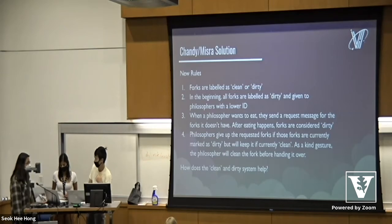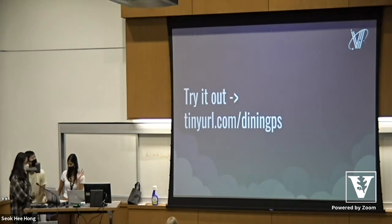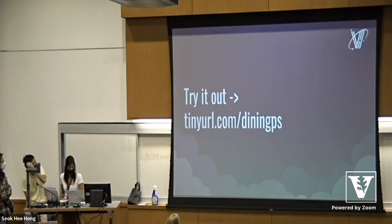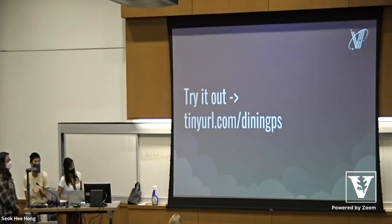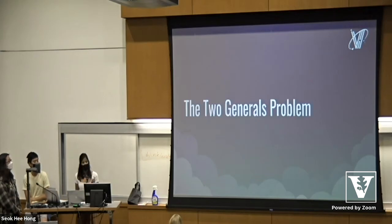I'm going to hand it off to Keshvi and Saki to talk about the next problem. Also, I have this link where you can try out this problem in an interactive club simulator with a collaborative algorithm and a non-collaborative algorithm. You can see the effectiveness of each and modify parameters like the rate at which each philosopher goes hungry. All right, so now we're going to move on to our second problem for this workshop.